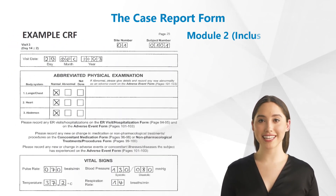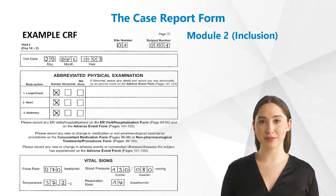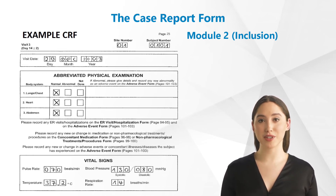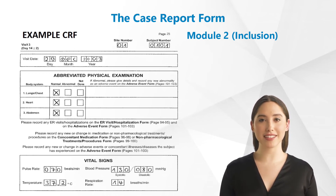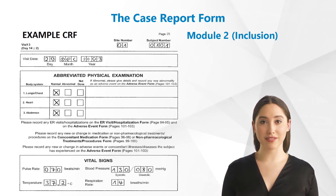Here is an extract of a CRF from Module 2. As you can see, it is noted that the examinations of lung/chest, heart, and abdomen showed no findings. Moreover, vital signs such as pulse rate and blood pressure, body temperature, and respiration rate are documented. At the top of the CRF page, you can see the study visit. Each page must be numbered with the patient number and the number of the trial site by the testers to avoid subsequent swapping of CRF pages.